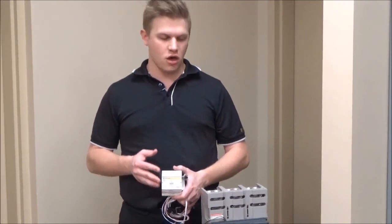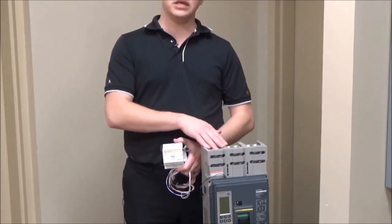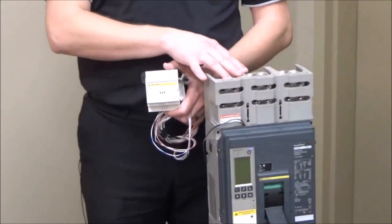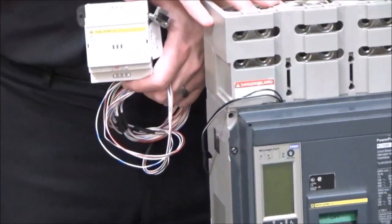In this video, we'll be showing you how to install the M2C and M6C programmable contact modules onto the P or R frame circuit breakers with MicroLogic P or H trip units.